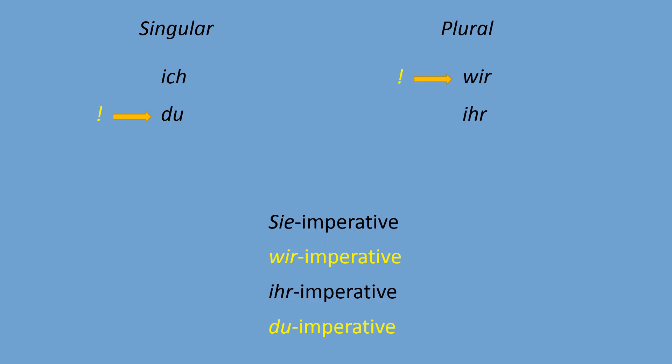The second person plural is 'ihr' — many friends. Can you give a command to many friends? Of course — 'hey guys, please go home, please do your homework.' You talk to many friends and give them a command, but you do not include yourself. We call it the ihr-imperative.